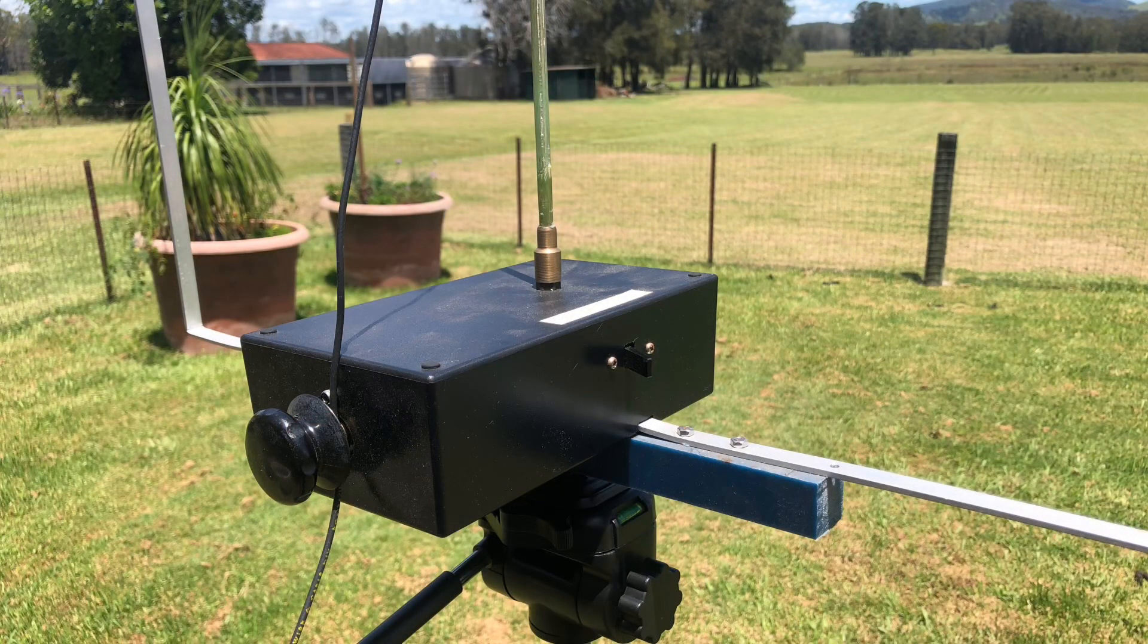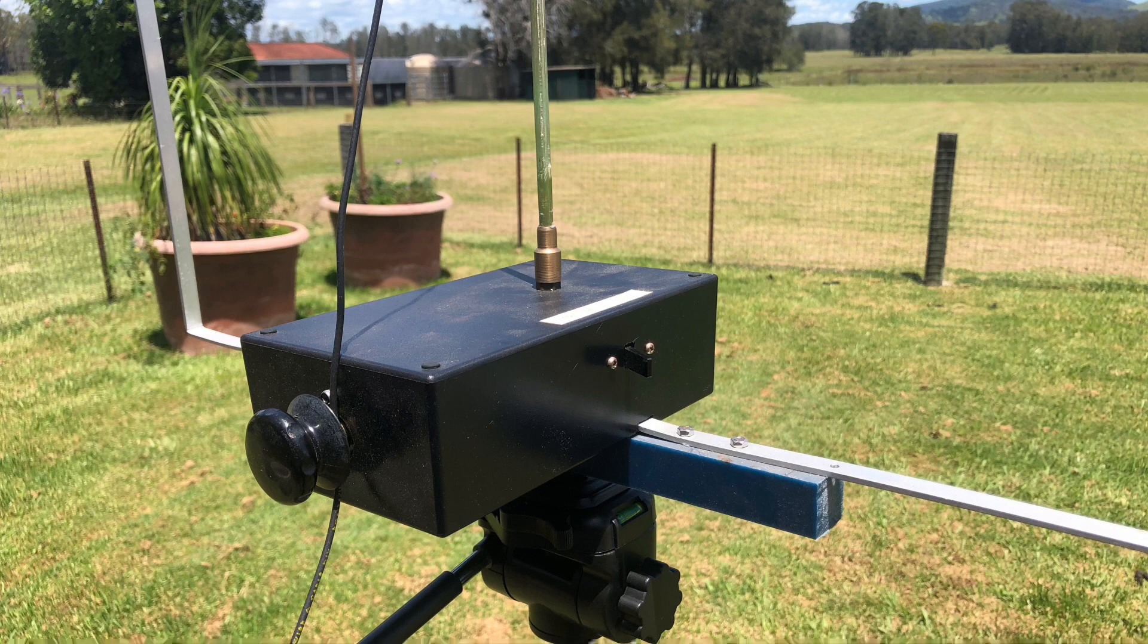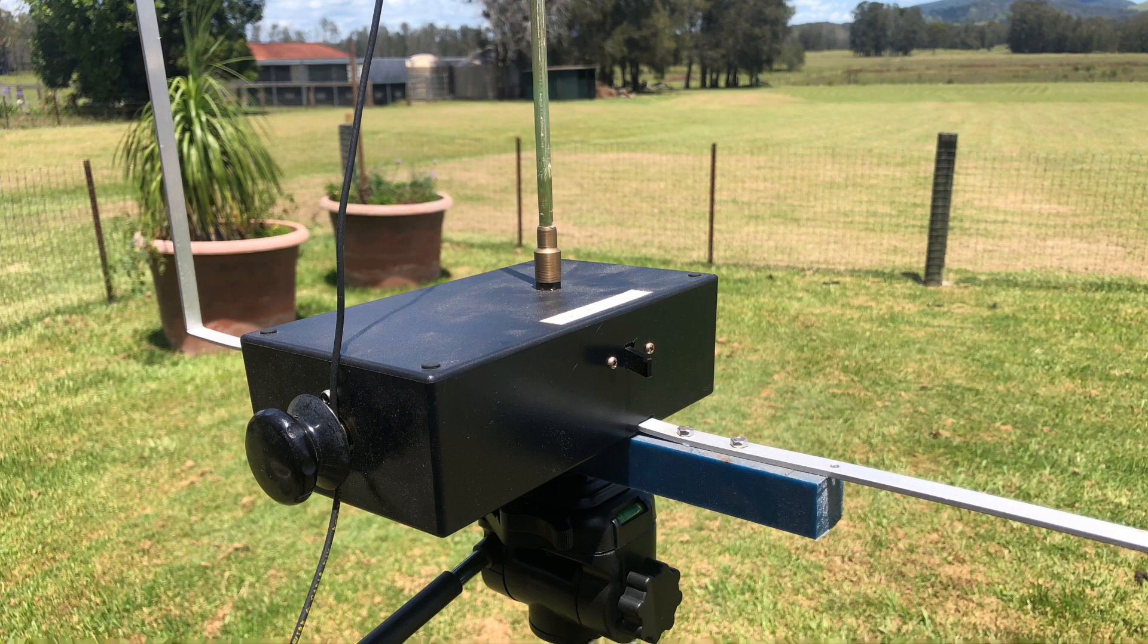The loop is made out of one centimeter by three millimeter aluminum strips which you can buy in Bunnings. The dimensions of my loop are about 65 centimeters on an edge. The black box you can see there contains the variable capacitor to tune the loop. The vertical element you can see there is actually a fiberglass rod and it's purely mechanical. Serves no other purpose other than to support the loop.